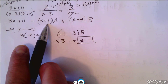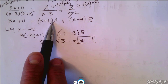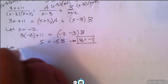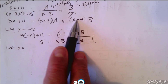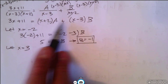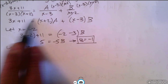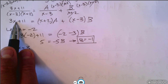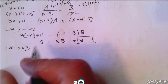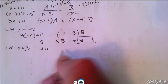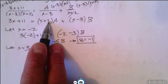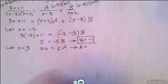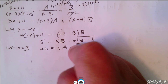Now we do the same thing to solve for a. If I want to zero out the b term, I let x equal 3, so x minus 3 becomes zero. Putting 3 in: 3 times 3 is 9, plus 11 is 20. On the right we have 3 plus 2 is 5, so 20 equals 5a, and that tells us a is equal to 4.